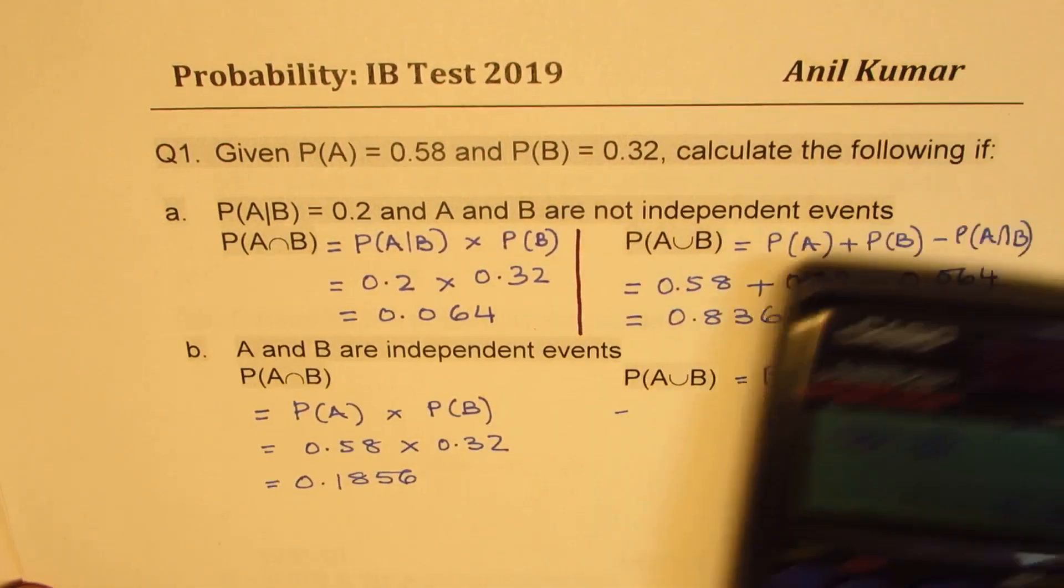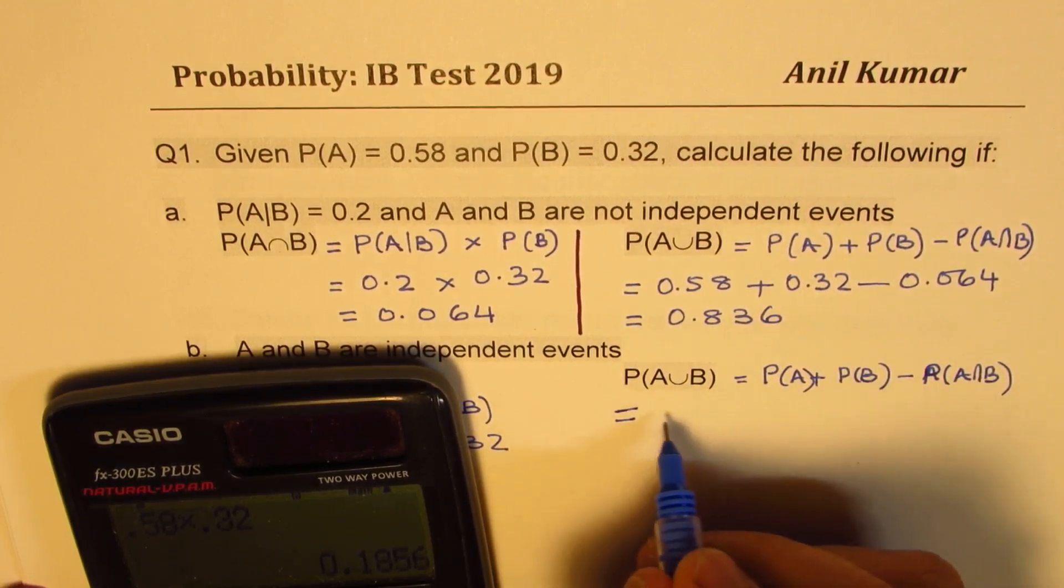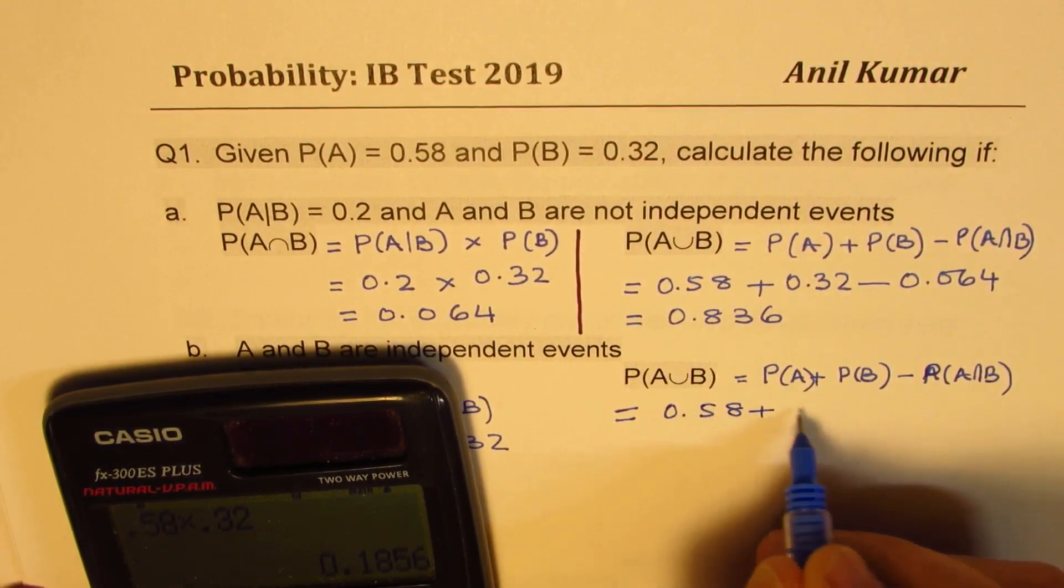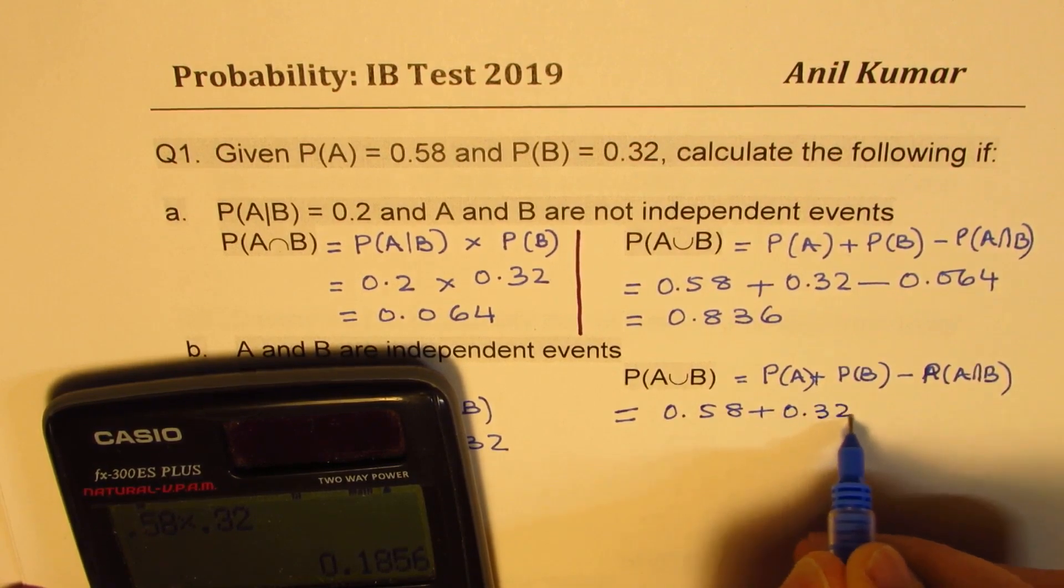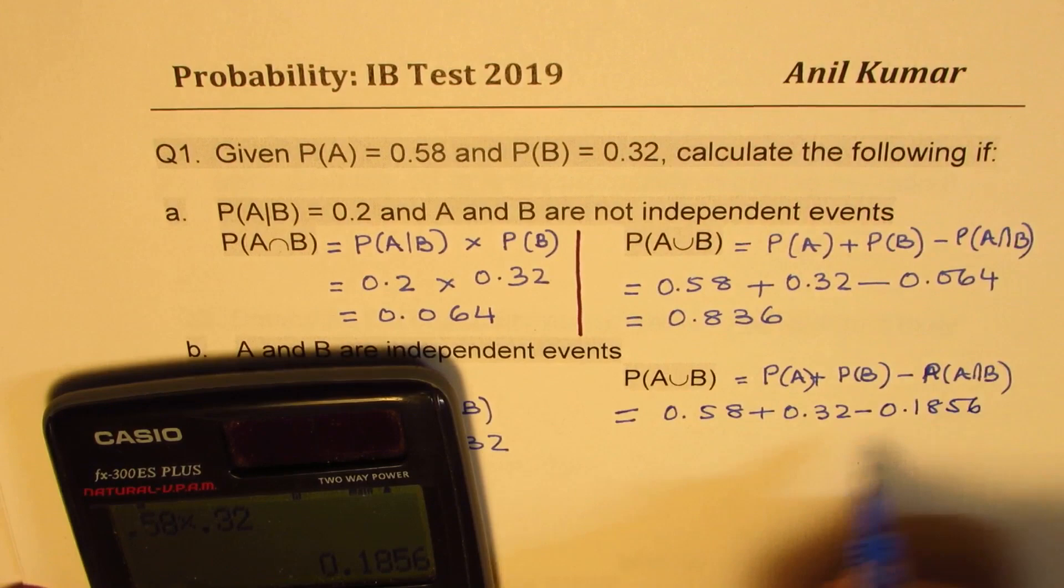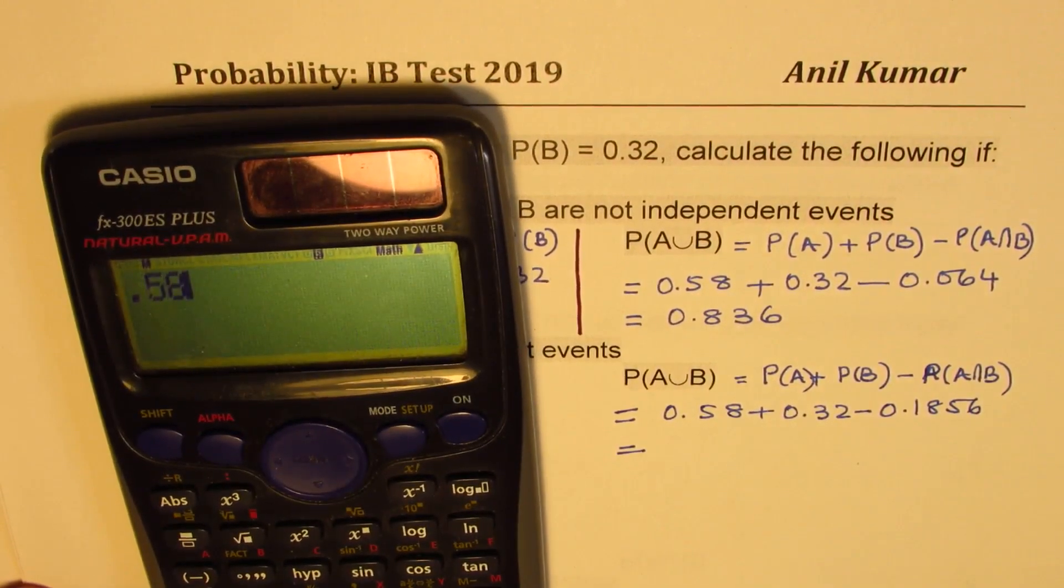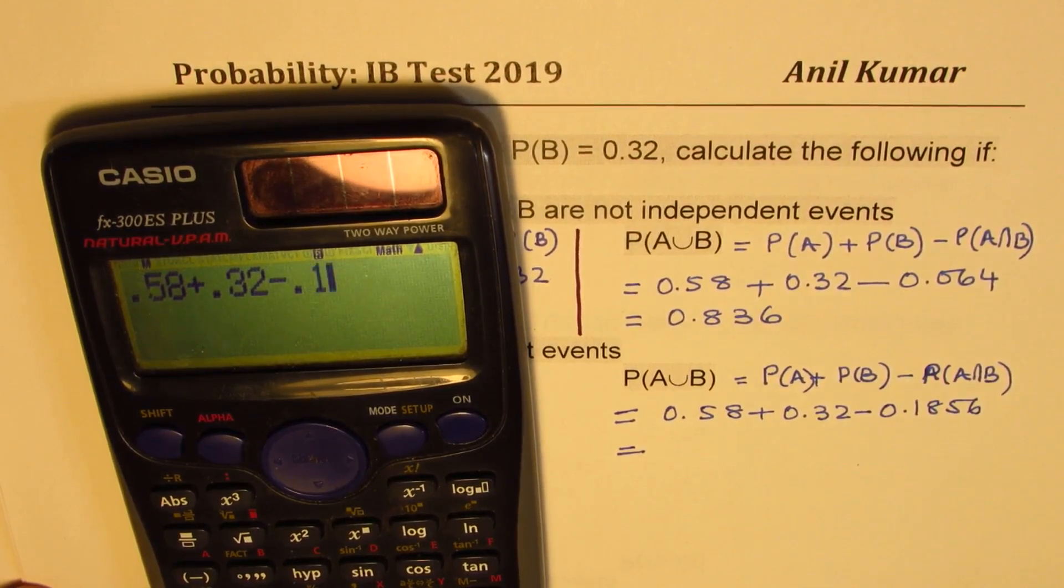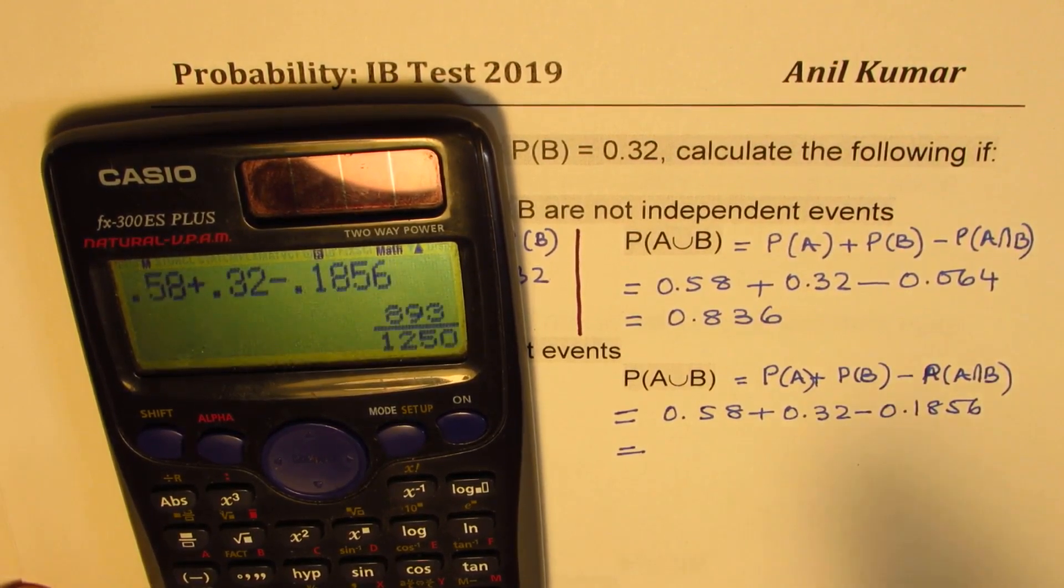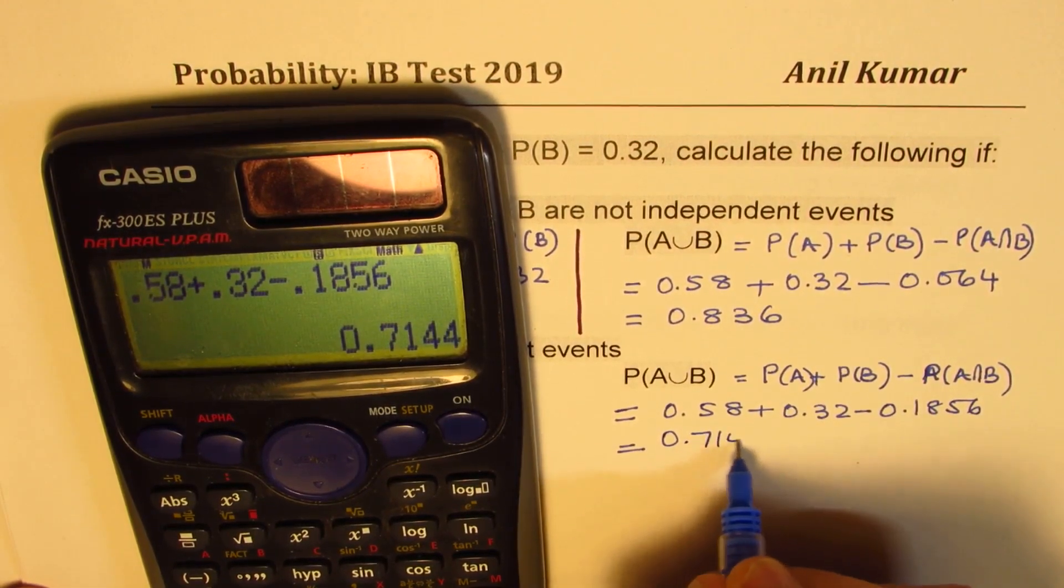So we'll add the probability of A and B. So we can write this as equal to, probability of A is 0.58 plus 0.32 minus 0.1856. So that is 0.58 plus 0.32 minus 0.1856 equals two decimals, 0.7144.